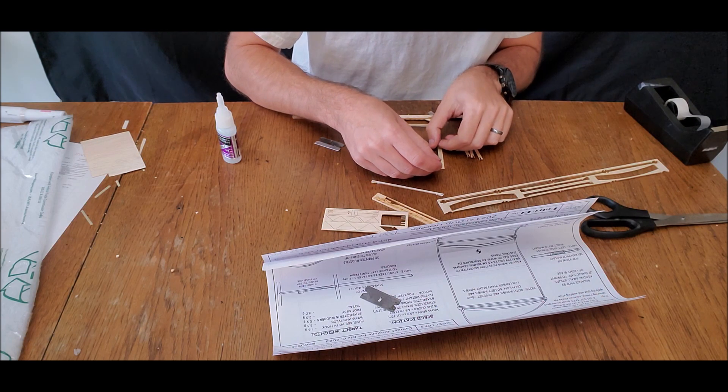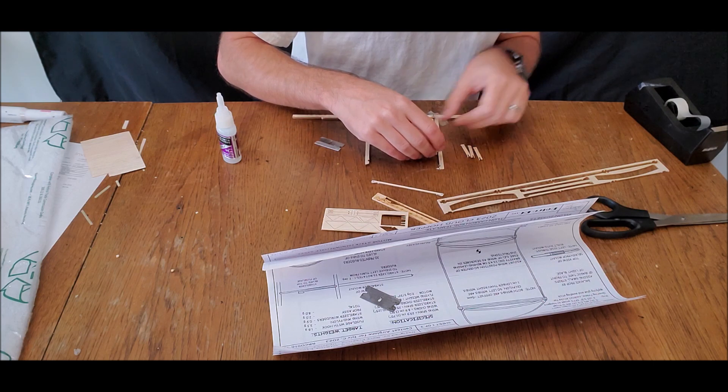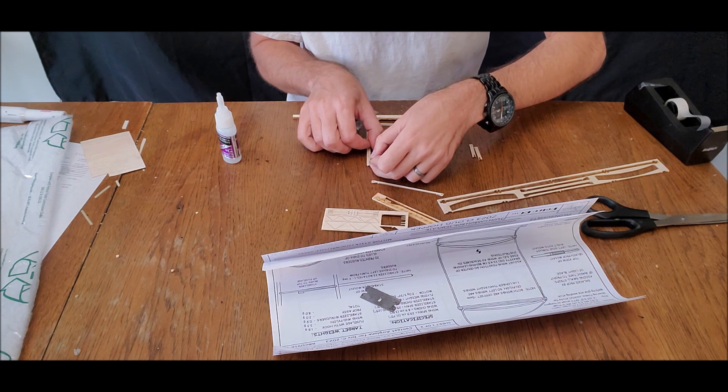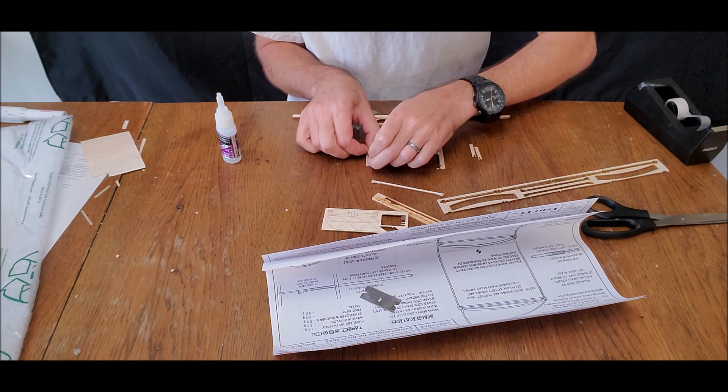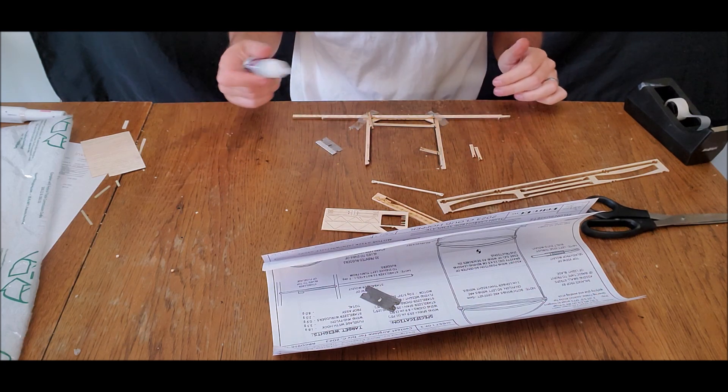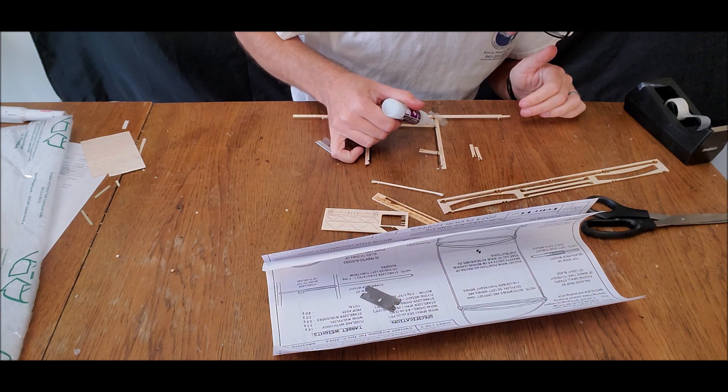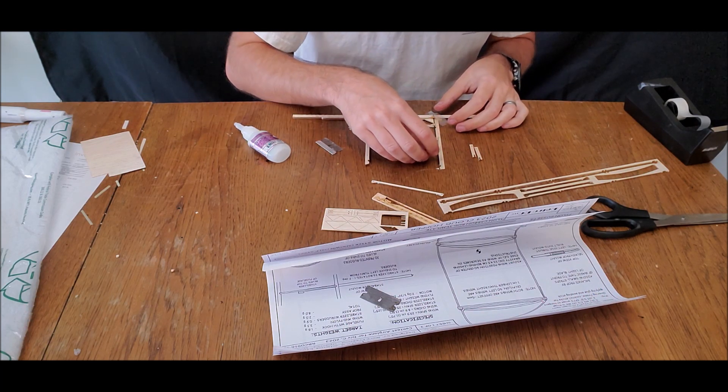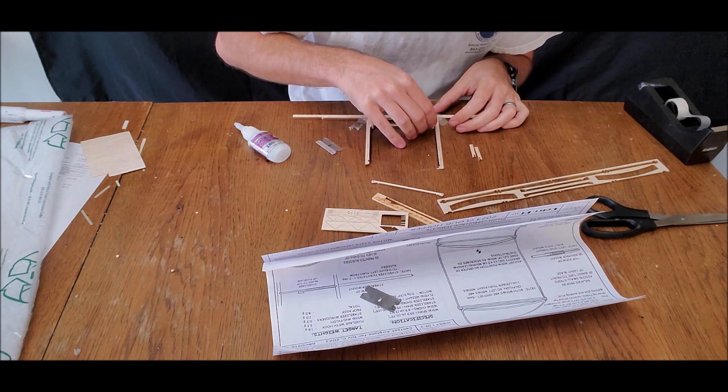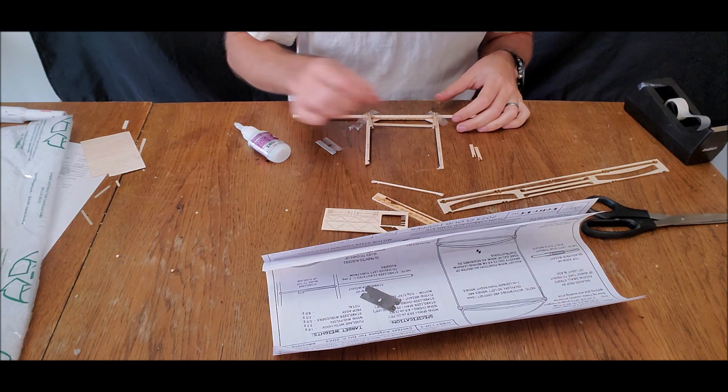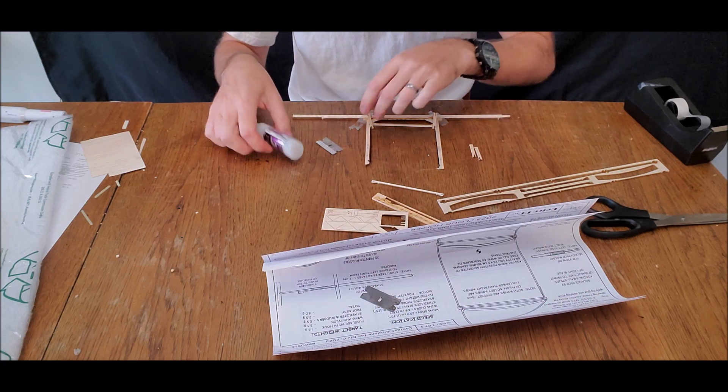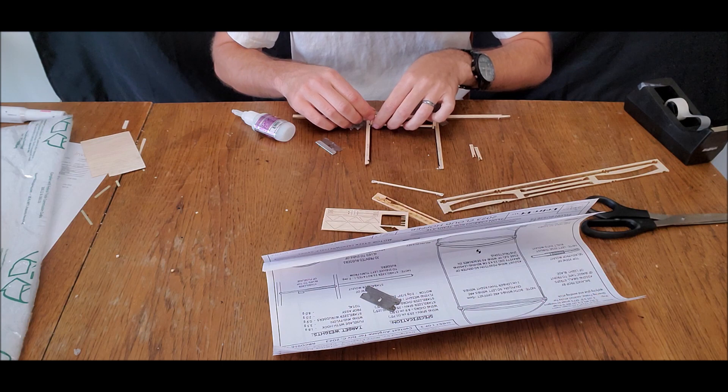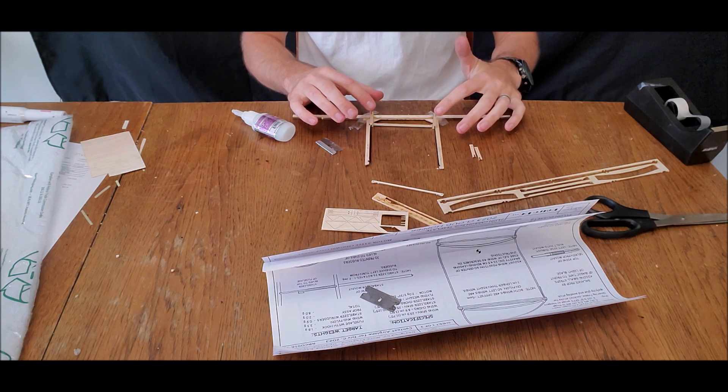The next thing we're going to do before we do anything further with wing saddles is place these gussets in. These kind of stiffen up the configuration down at the bottom. I'm going to go ahead and tape this thing in place. You can do a lot more extensive taping of everything, but this kind of gives the basic arrangement you're after.